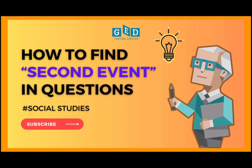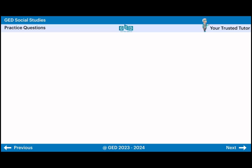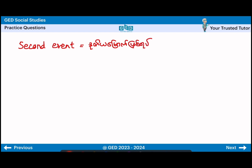In this video, the second event is the second event. This means the order of sequence of event details.